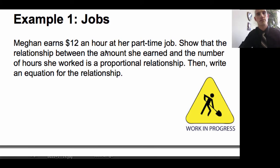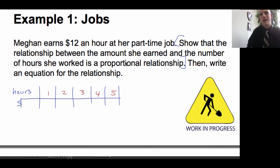Here's an example of a job. Megan earns twelve dollars an hour at her part-time job. Show that the relationship between the amount she earned and the number of hours she worked is a proportional relationship, then write an equation for the relationship. When we're looking at this, if we're going to show the relationship is proportional, we need to show that for each hour it doesn't matter how many hours she works, it's still going to be the same each hour. So hours and money - let's say she works one hour, two hours, three hours, four hours, five hours. In green we're going to put the money. For one hour she'd get twelve dollars. Two would be twenty-four, three would be thirty-six, four would be forty-eight, five would be sixty bucks. What we need to show is that all of them boil down to the same proportion.